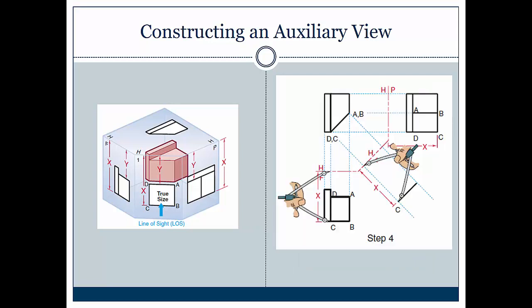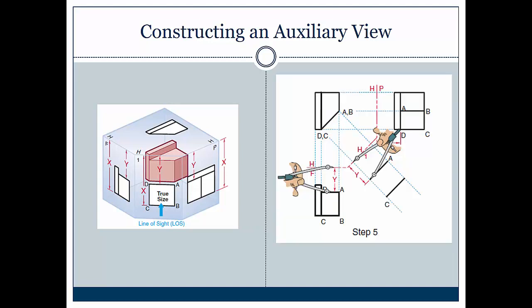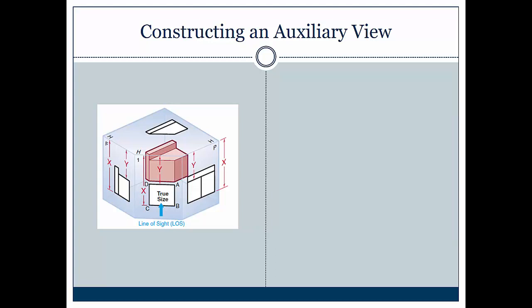Step 3 is to project the length of the inclined surface from the front view using construction lines. Step 4 is to transfer the depth of an inclined surface from the top view. Step 5 is to draw a line perpendicular to the projectors.